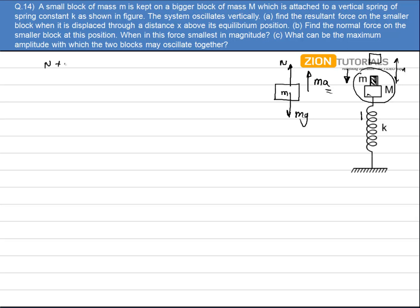So I can write N plus ma is equal to mg. I have to calculate the resultant force. Ma is my resultant force. So ma can be written as mg minus normal force. Now this acceleration is of course equal to omega square x. So the resultant force is equal to mass into omega square x.